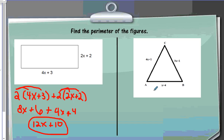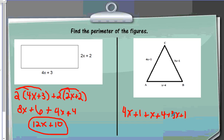For this triangle, we're simply going to add up all our sides: (4x plus 1) plus (x plus 4) plus (3x plus 1). Combining like terms — 4x, x, and 3x gives me 8x. Then 1 plus 4 plus 1 gives me 6. So the perimeter of this triangle is 8x plus 6.